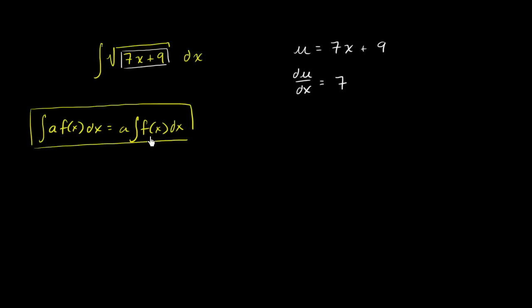So with that in mind, can we multiply and divide by something that will have a 7 showing up? Well, we can multiply and divide by 7. So imagine doing this. Let's rewrite our original integral. We could write our original integral as being equal to the integral of 1 seventh times 7 times the square root of 7x plus 9 dx.